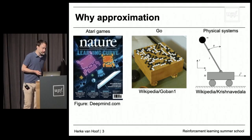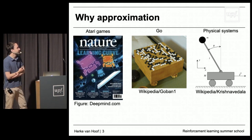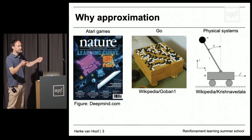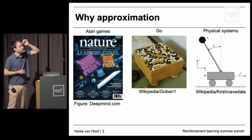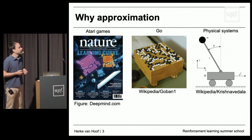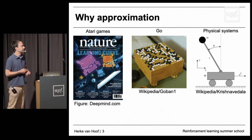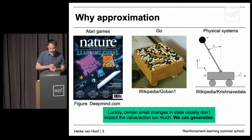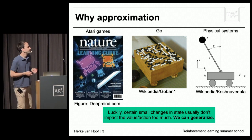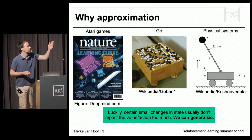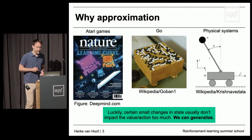As a couple of examples: for Atari games, your state is given by the screen, where you can have lots of different pixel values. You have the game of Go, where you have millions of possible boards with black and white stones in different places. And in robotics or control, you often have continuous values — like a cart that can drive left and right, with a position and a velocity. For all of these systems, you hope that small changes in state don't impact the value or action that you want to decide that much. So you can generalize.